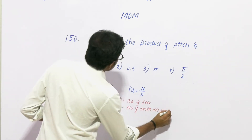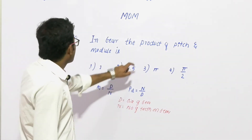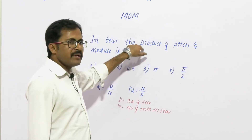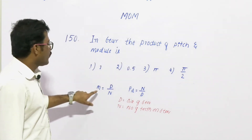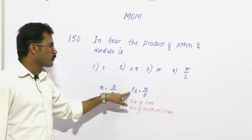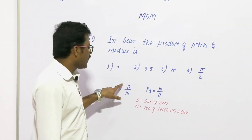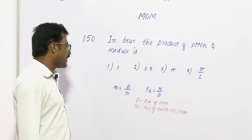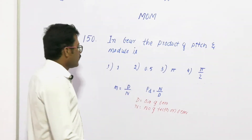The question is asking: what is the product of diameter pitch and module? We have the formula for module and for diameter pitch: m = d/n, and Pd = n/d.